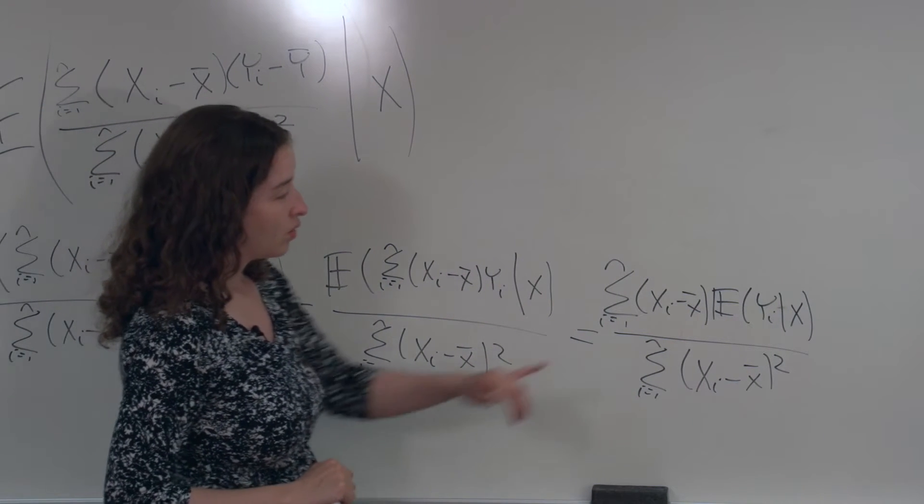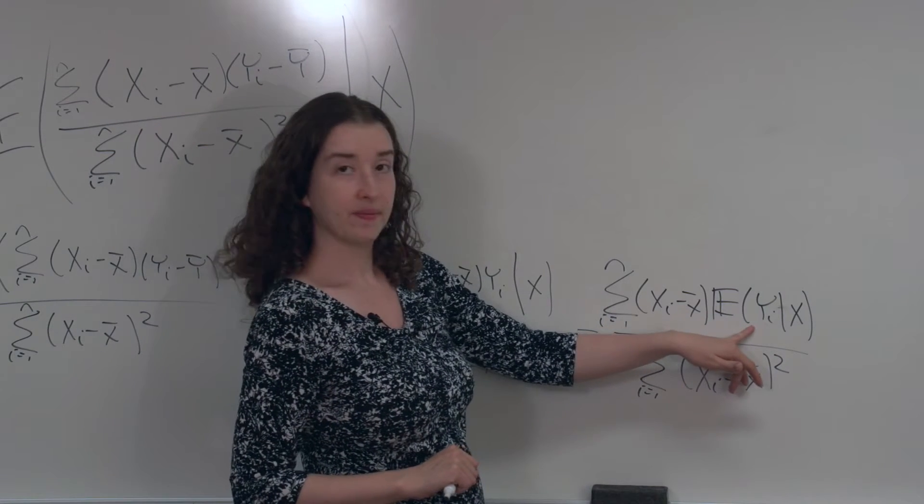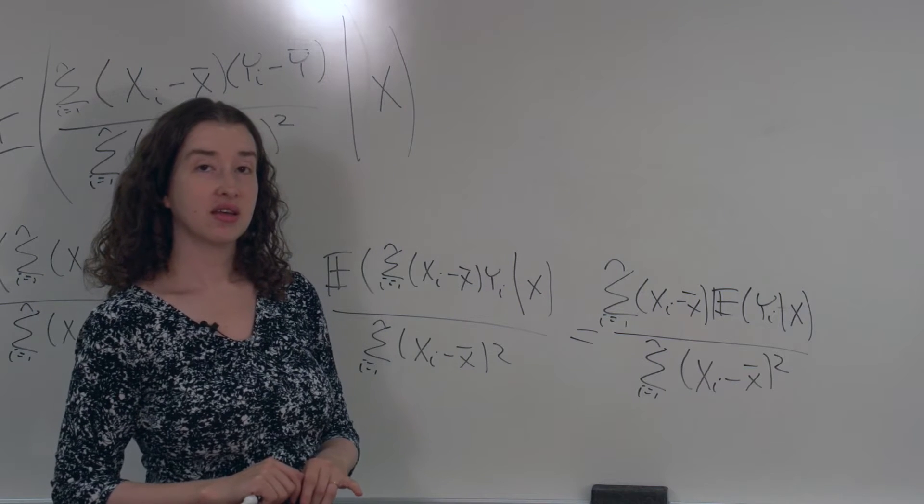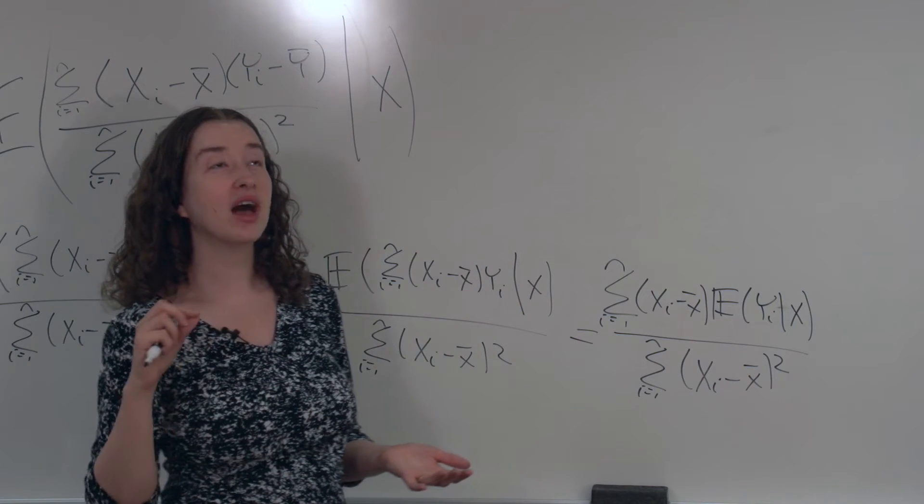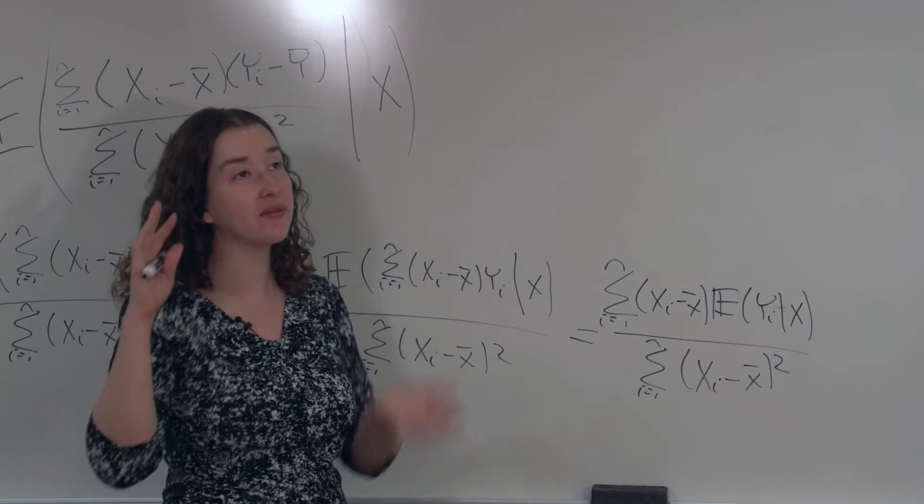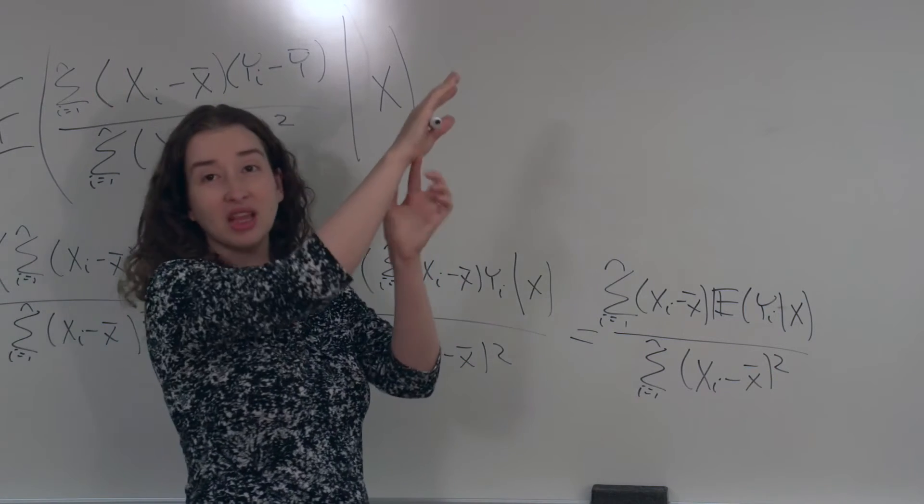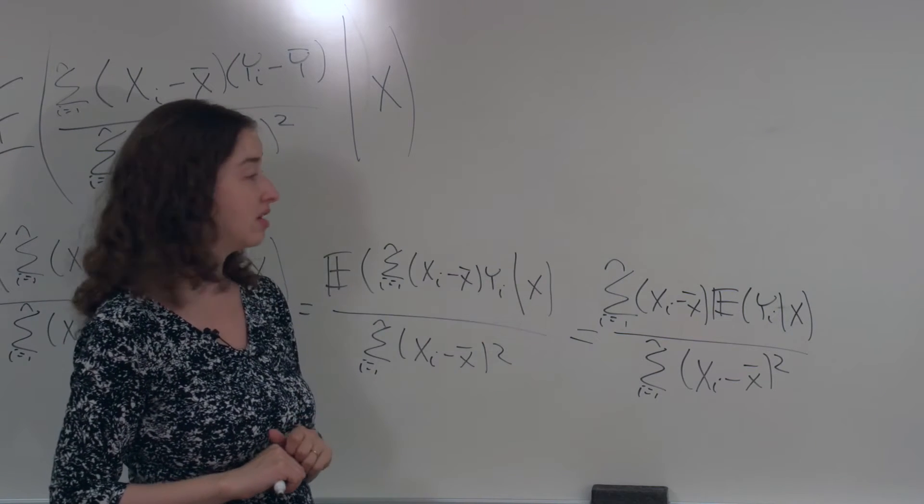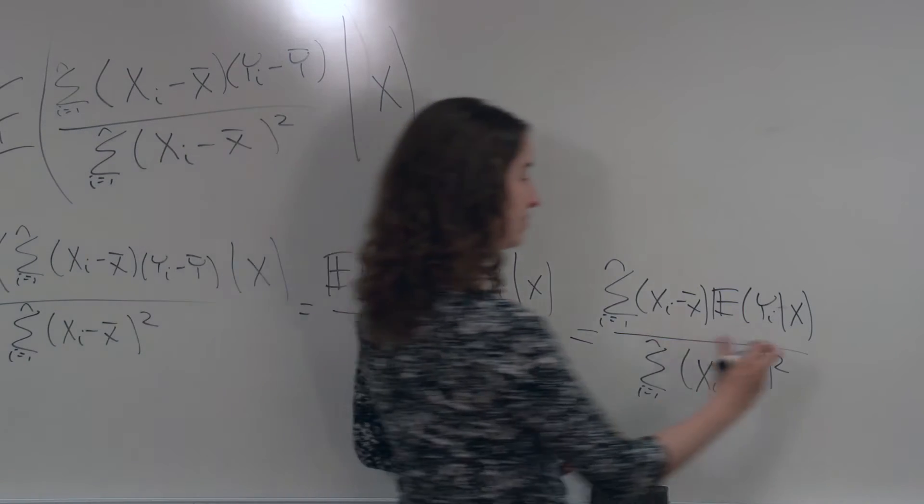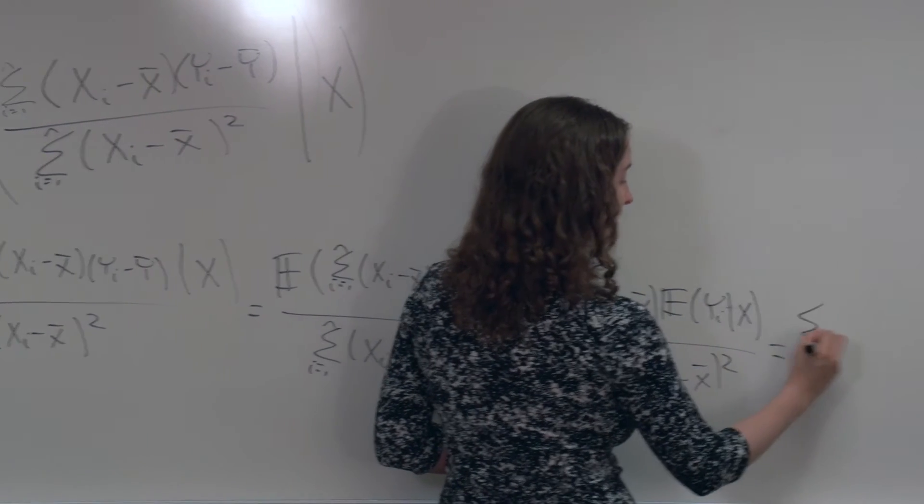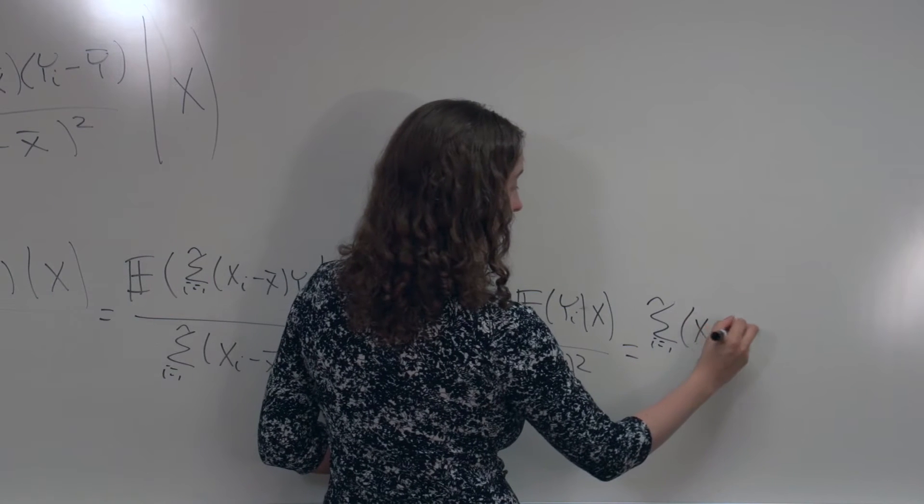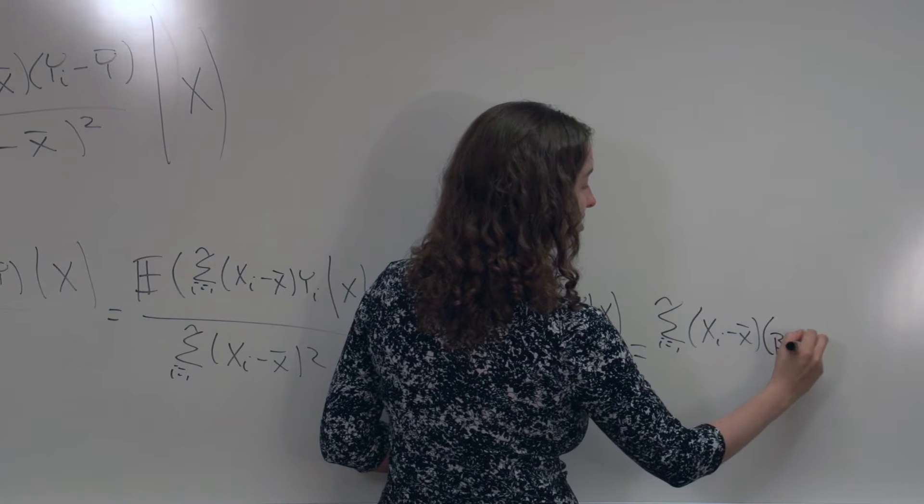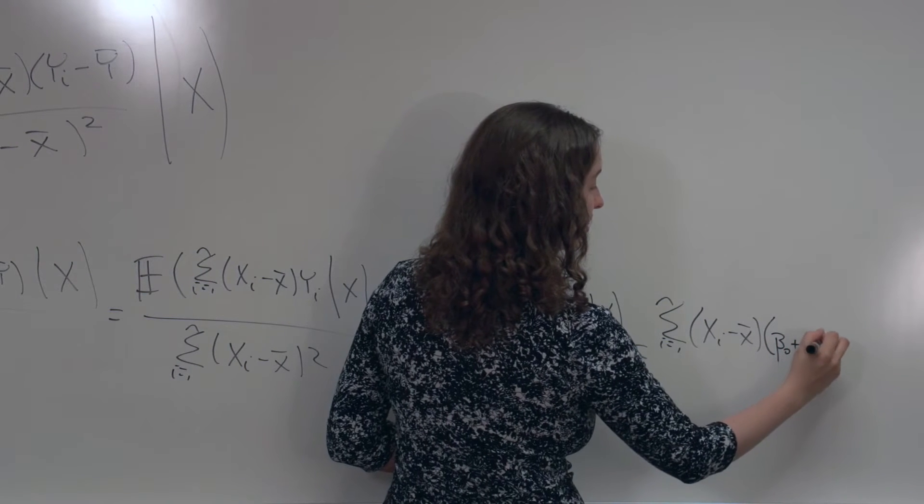Now what? Remember that the expected value of yi given x is just the point on the line. In other words, what value would you expect to see for y for a particular person who has a certain value of x? Well, wherever the line predicts for that person. In other words, beta 0 plus beta 1 x. That's what we wrote down a moment ago.